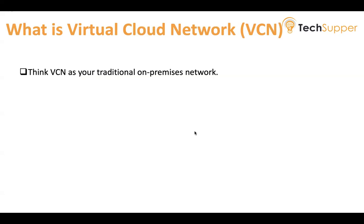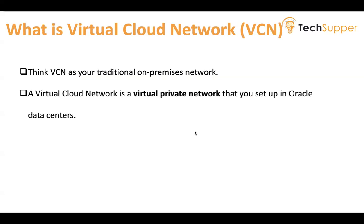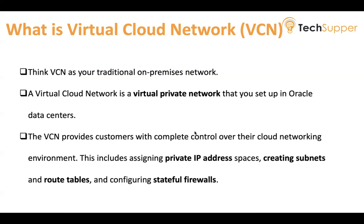The Virtual Cloud Network is a virtually private network that we set up in Oracle Cloud data centers. It's like a wizard-based approach where you create your VCN with a CIDR range of your choice. The VCN provides customers with complete control over their cloud networking — whether they want to access resources within their network or from the internet. VCN functionality includes assigning private IP addresses, creating subnets, route tables, different types of gateways, and firewall rules.